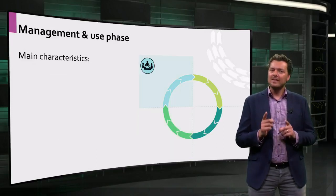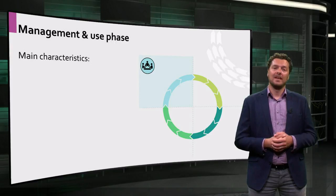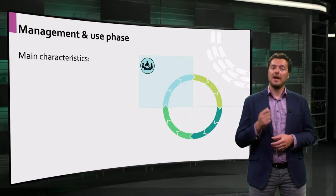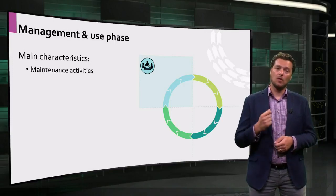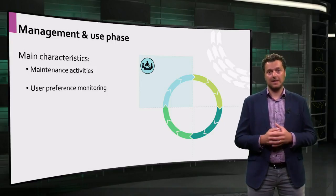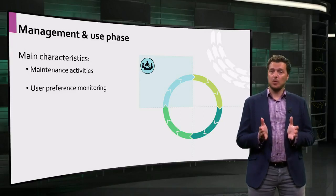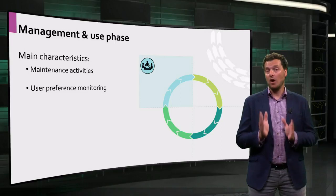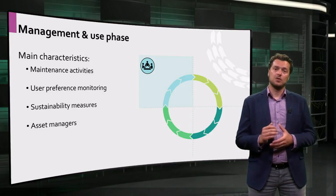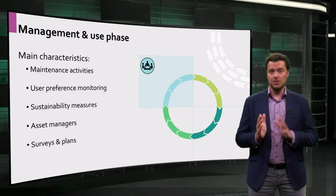If you made all the right decisions, you have successfully adapted a building. People can start using it now. This brings us to the management and use phase, the longest phase of the building cycle. Here, the building needs to be maintained in order to keep it functioning properly. Also, the building must support the user needs continuously. In addition, sustainability measures should be considered — for instance, to improve the energy efficiency of the building. Asset managers are responsible for managing the building in its use phase. In order to do so, they apply management tools like maintenance plans and user surveys.